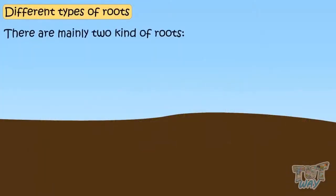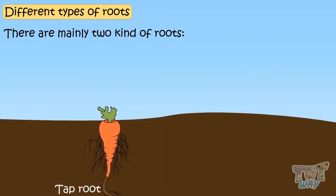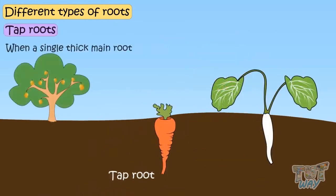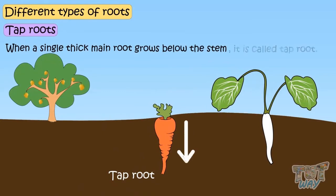There are mainly two kinds of roots: tap roots and fibrous roots. When a single thick main root grows below the stem, it is called a tap root.